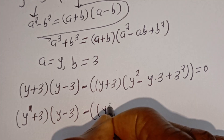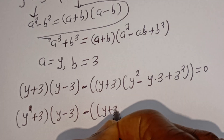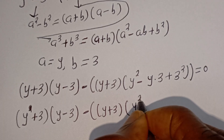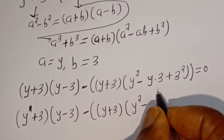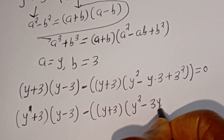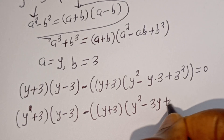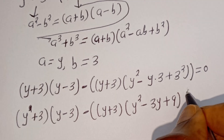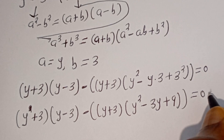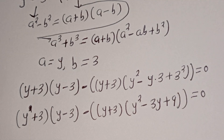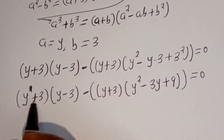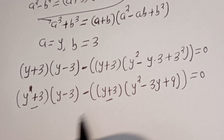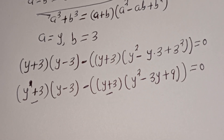We have y plus 3, bracket, y squared minus 3y plus 9, equal to 0. Now, y plus 3 is common in both terms. Let's bring it out.